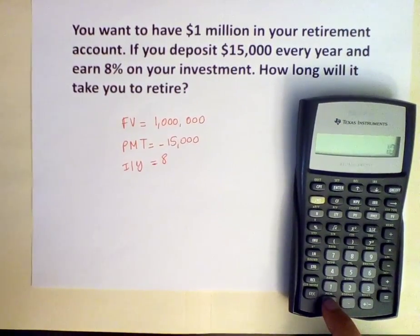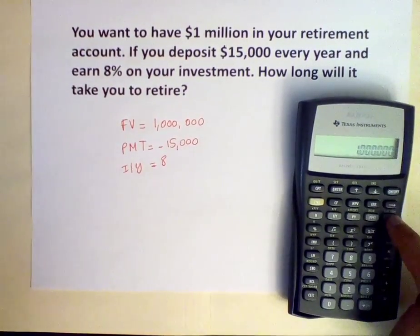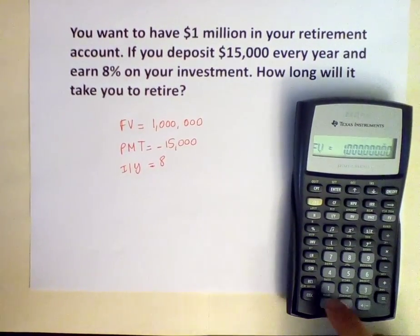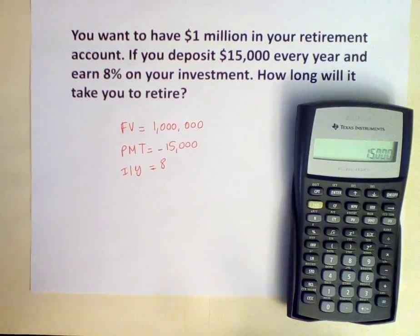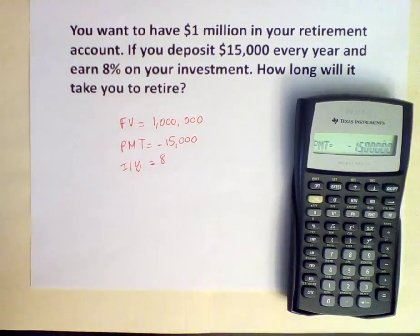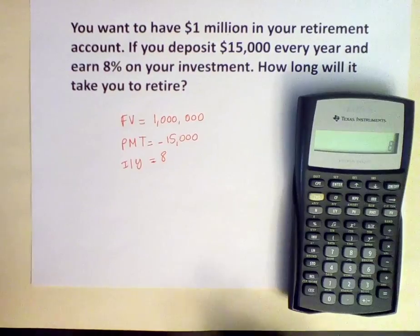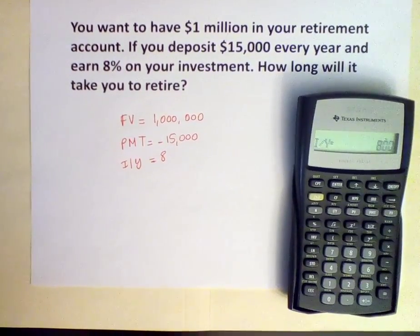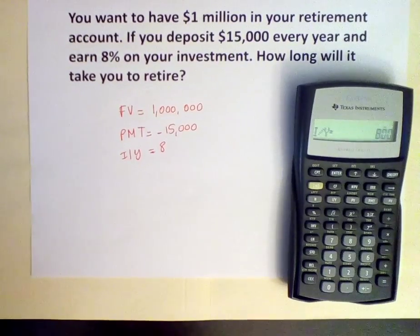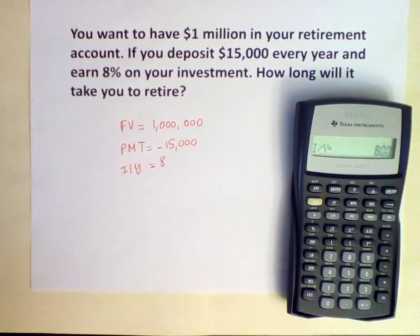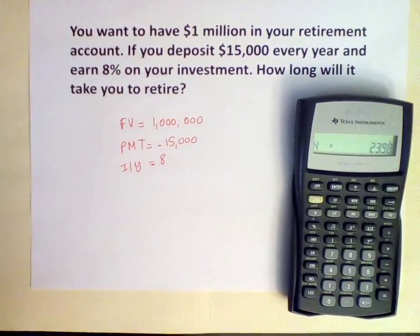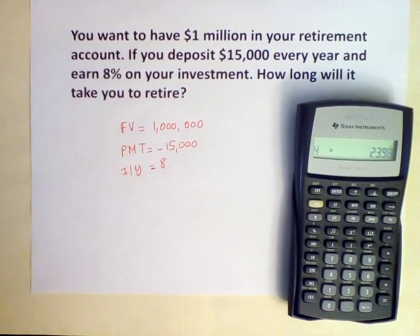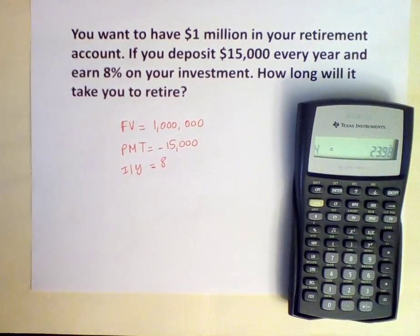We input the information that we have. $1 million is our future value, so we enter $1 million and push the FV button. $15,000 is our deposit made every year, and given that this is a cash outflow, we input it as a negative number and push the PMT button. 8 is the interest rate, so we input that. We want to know how long it will take to achieve the $1 million future value goal, so we are solving for N. We hit CPT to compute N, and it will take us about 23.98 years — approximately 24 years — of depositing $15,000 every year.